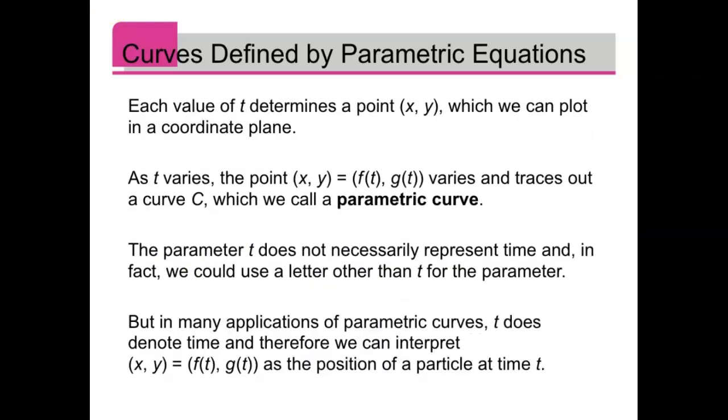Each value of t will determine a separate coordinate (x, y) that we can plot in the coordinate plane. As t varies, the point (x, y), which is given by f(t), g(t), will vary and trace out a curve C, which we call a parametric curve.